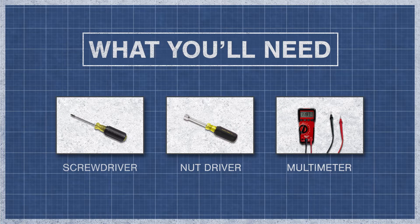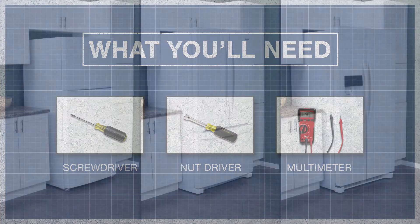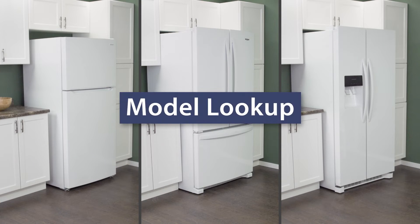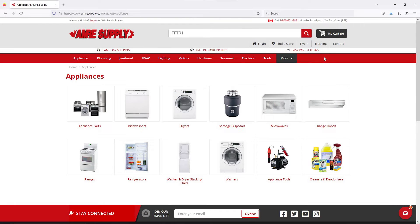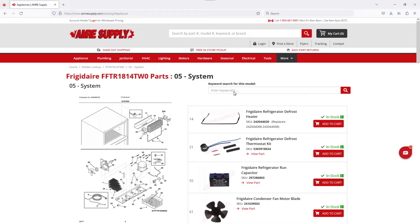To begin you might need a screwdriver or nut driver and a multimeter. Keep in mind there is some variation between models and not all refrigerators will have the same parts. You can enter your model number on the AIM Resupply website to see a parts breakdown. This can be helpful to show you which parts are in your refrigerator and where they are located.